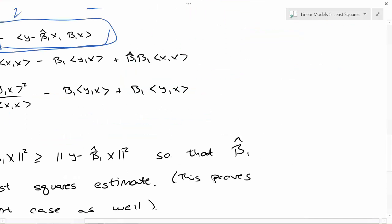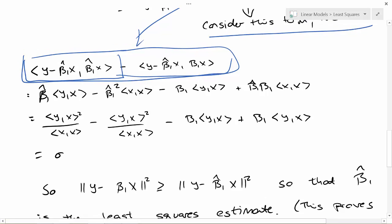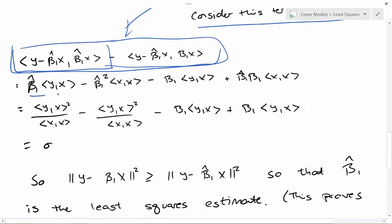Well, if I expand this function out, I get beta_1 hat times the inner product of y and x minus beta_1 hat squared times the inner product of x with itself. Beta_1 times the inner product of y and x plus beta_1 hat times beta_1 times the inner product of x with itself. Remember, beta_1 hat is inner product y and x divided by the inner product of x with itself. So this term is the inner product of y and x squared divided by the inner product of x with itself.